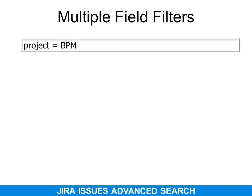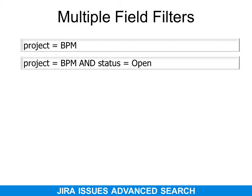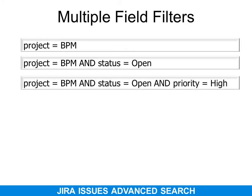For multiple field filters, use the Boolean AND operator between each field — meaning results must meet all criteria. For example: project equals BPM AND status equals open AND priority equals high. You can keep adding filters, though adding too many may return no records. With these three filters, you'll find exactly the records you're looking for.